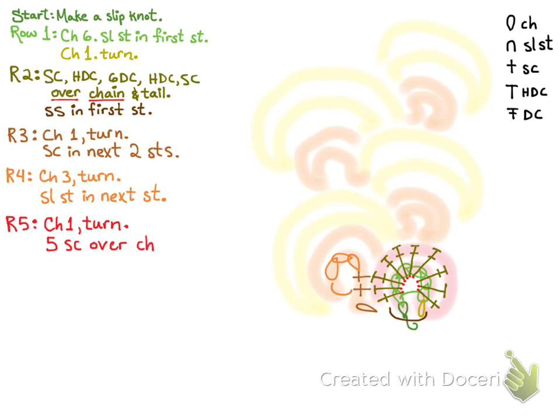For row five, chain one and turn. And then five single crochet over the chain and single crochet into the next stitch. So again, these are over the chain crochets and not into the chain stitches.